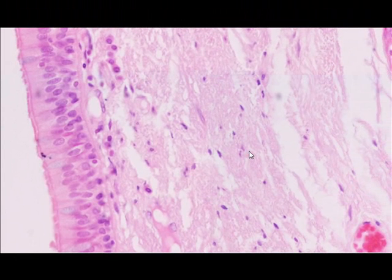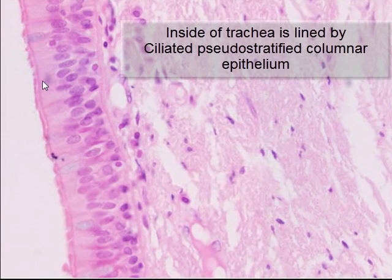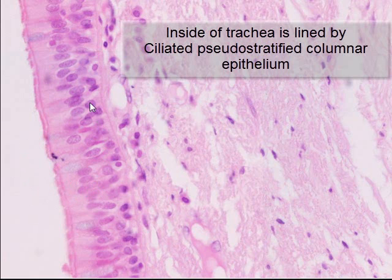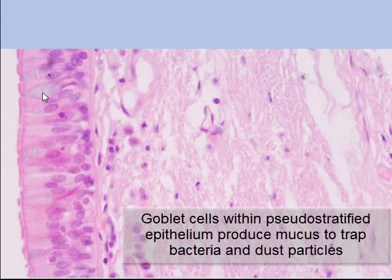The sample under the microscope is from the trachea, which is lined by ciliated pseudostratified columnar epithelium. This is the lumen of the trachea, and the inner lining is made up of ciliated pseudostratified columnar epithelium, which also has numerous mucus-producing goblet cells. These goblet cells produce mucus.